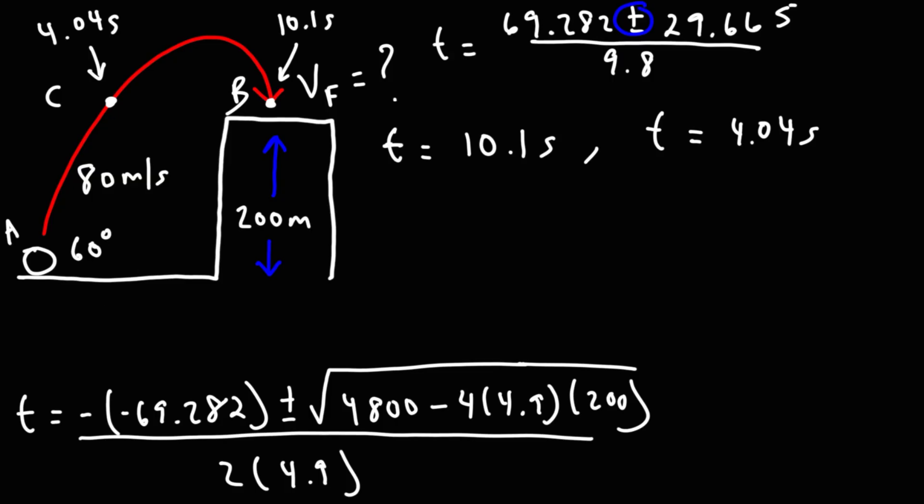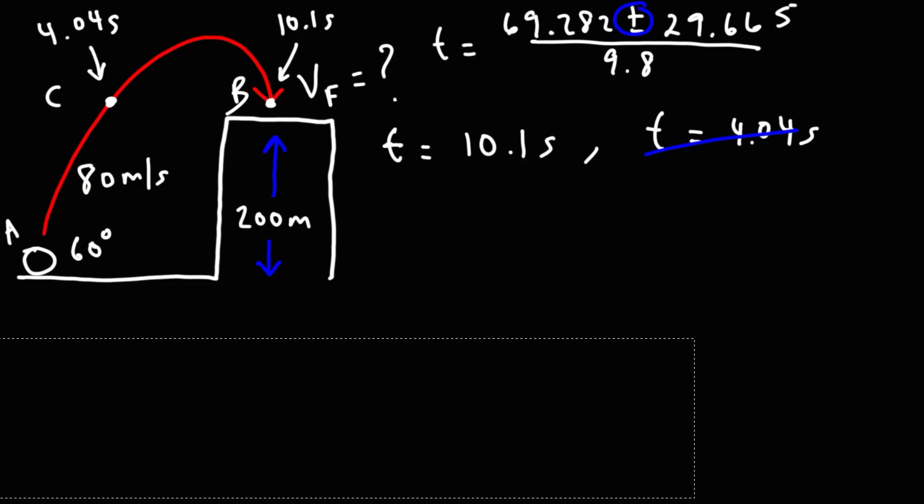So we want to find the final velocity, or the final speed, just before it hits the building at point B. So therefore, we don't need this value. So I'm going to rewrite this answer here. So T is 10.1 seconds.